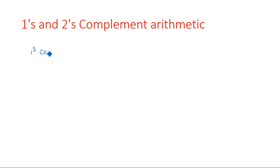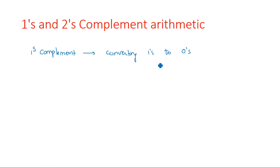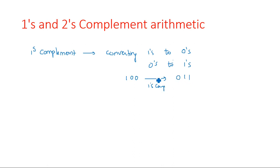Ones complement means converting ones to zeros — just replacing: if any one is there in the given bits, we write zero, and if any zero is there, we change it to one. For example, the number 1 0 0 — the ones complement for this number is 0 1 1, just changing ones to zeros and zeros to ones.